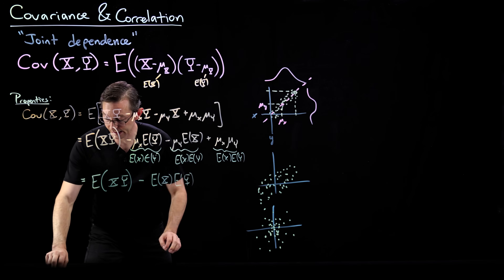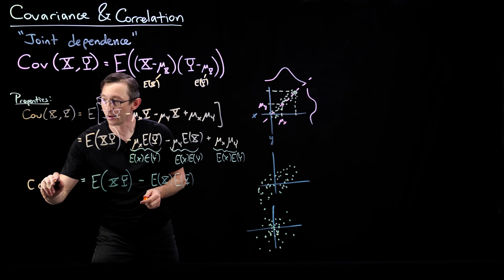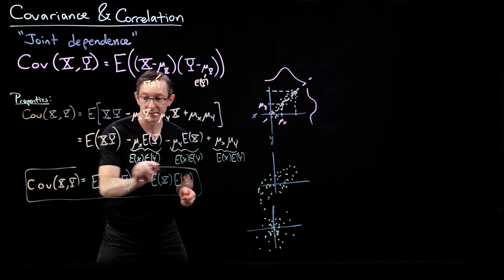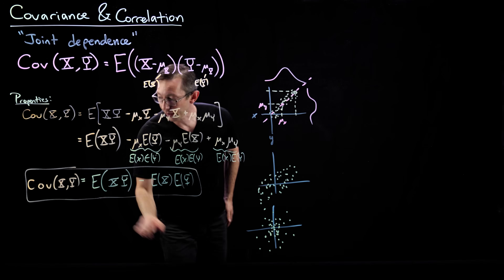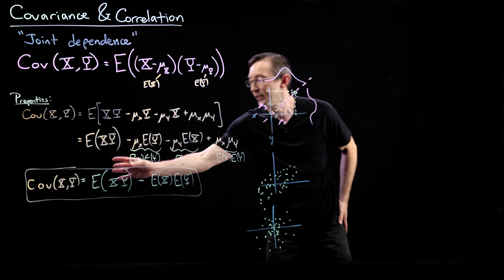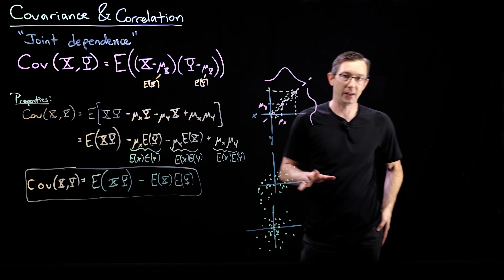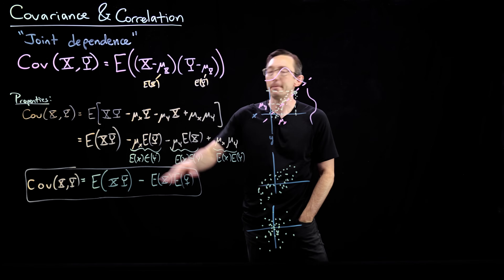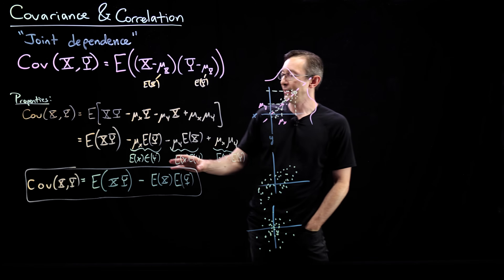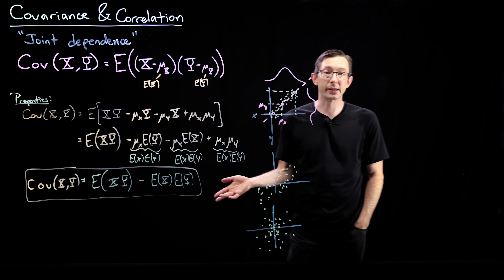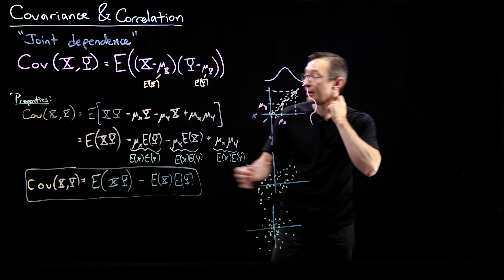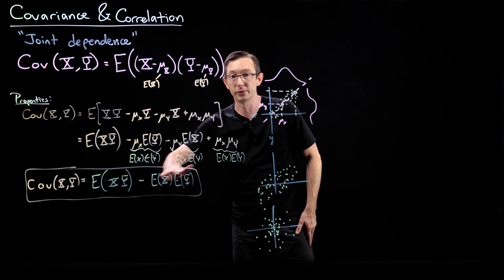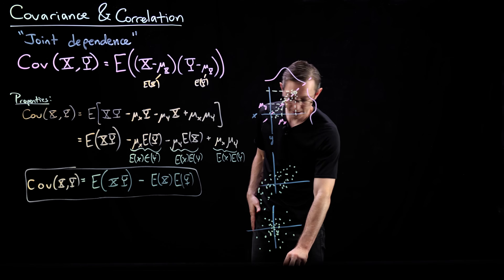So this yields: Cov(x, y) = E[xy] − E[x]·E[y]. This is a nice formula for the covariance of x and y. You'll notice right away that if x and y are independent, then this covariance is equal to zero, because for independent x and y, E[xy] equals E[x]·E[y], so the terms cancel.